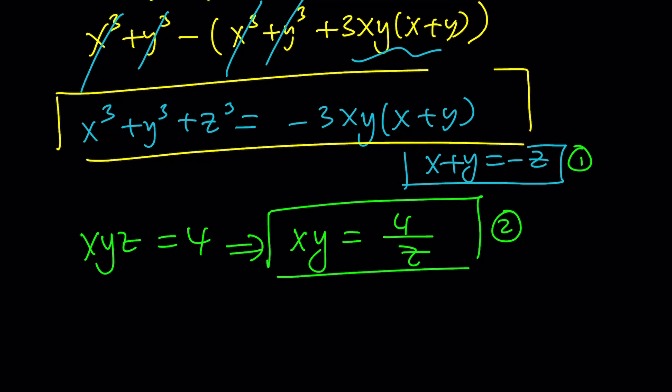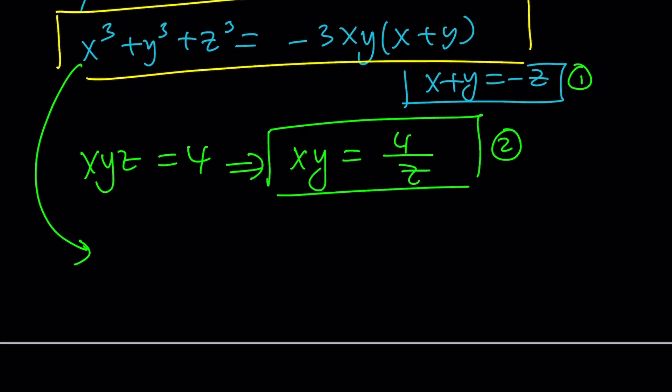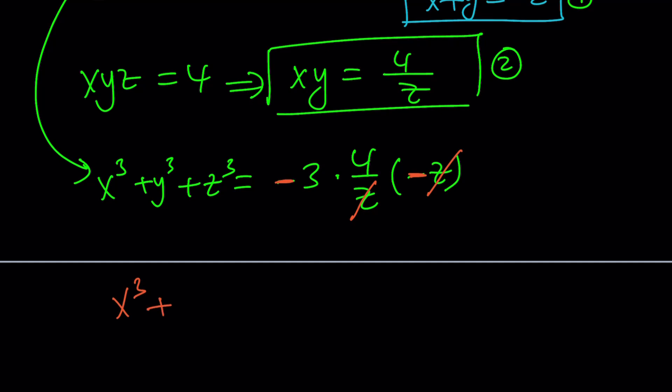So what am I trying to find? This x cubed plus y cubed plus z cubed, and that is equal to negative 3xy, which can be replaced with 4 over z, times x plus y, which can be replaced with negative z. And this is just awesome because z cancels out. This is why it's so special. Now we're going to cancel out the z. Don't forget the minus sign. Multiply by another minus sign, it's going to become positive. Therefore, the sum of the cubes of these three numbers will be 3 times 4. They're both positive, and that is actually 12. So the answer is 12.